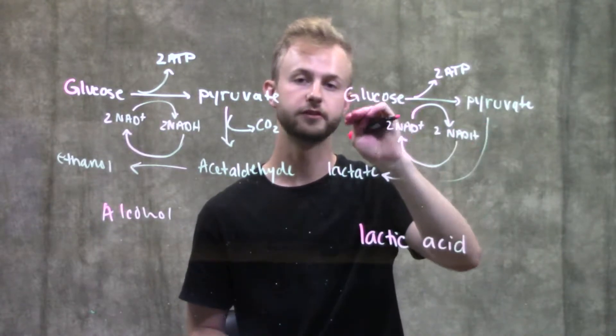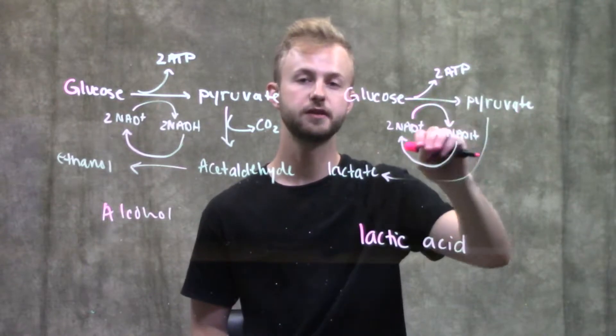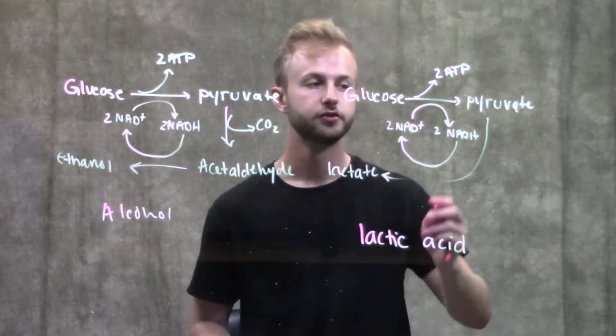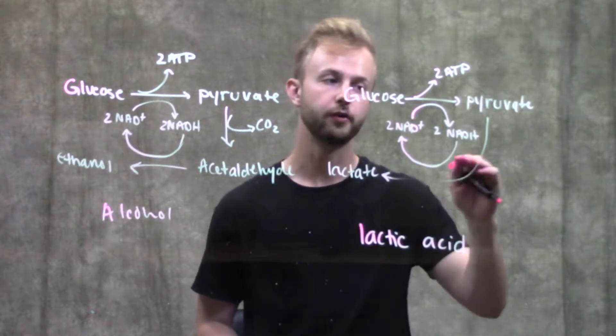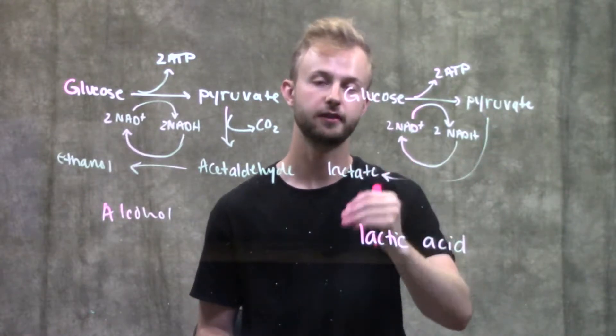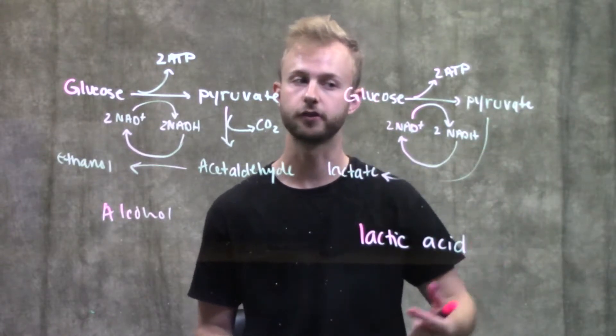We produce pyruvate from glucose as well as two ATP and two NADH. Unlike alcohol fermentation though, pyruvate can be directly reduced to lactate. It doesn't have to change into a different intermediate first.